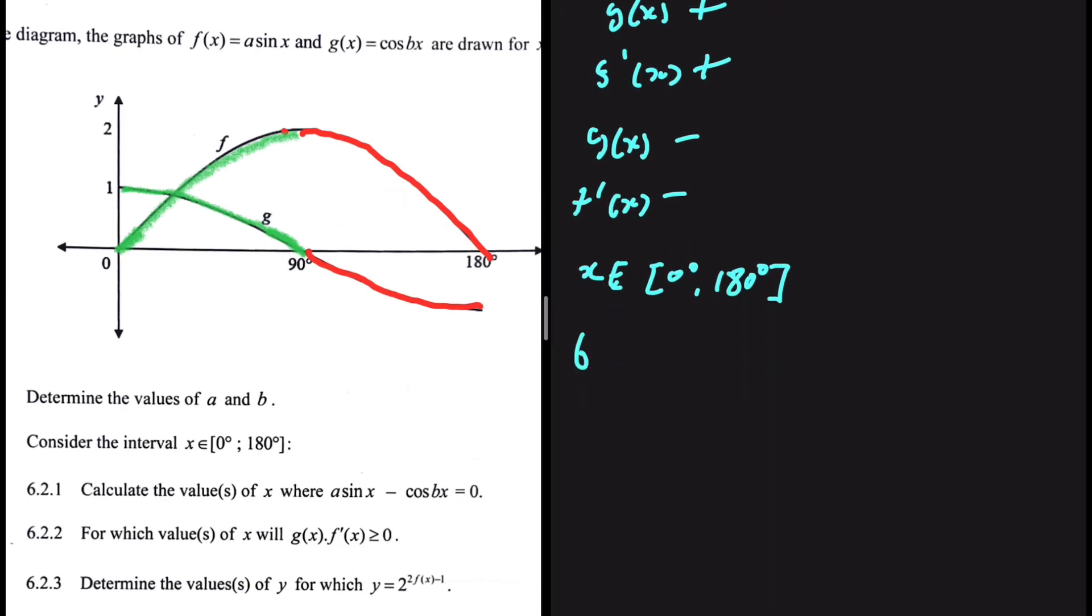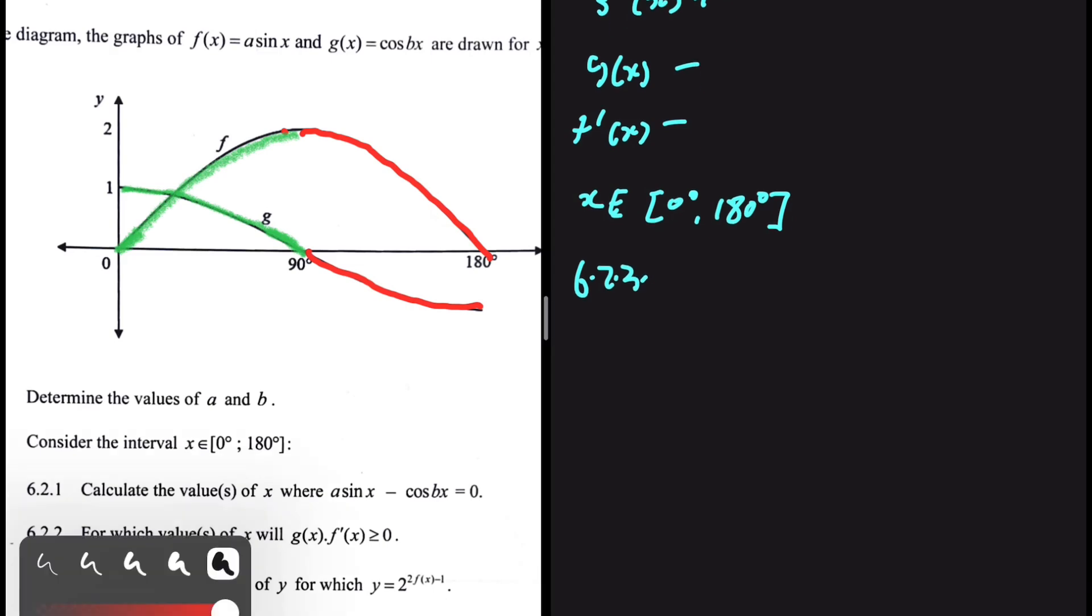Let's look at 6.2.3. Quite an interesting one. Determine the values of y for which y equals 2 to the power 2 multiplied by f of x minus 1.